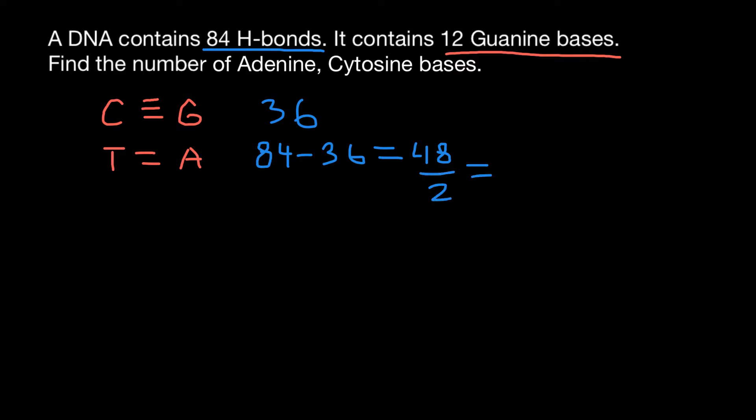And we are going to get the number of pairs of thymine and adenine, which is going to be 24 adenines and also 24 thymines. And between them we are going to have 48 hydrogen bonds.